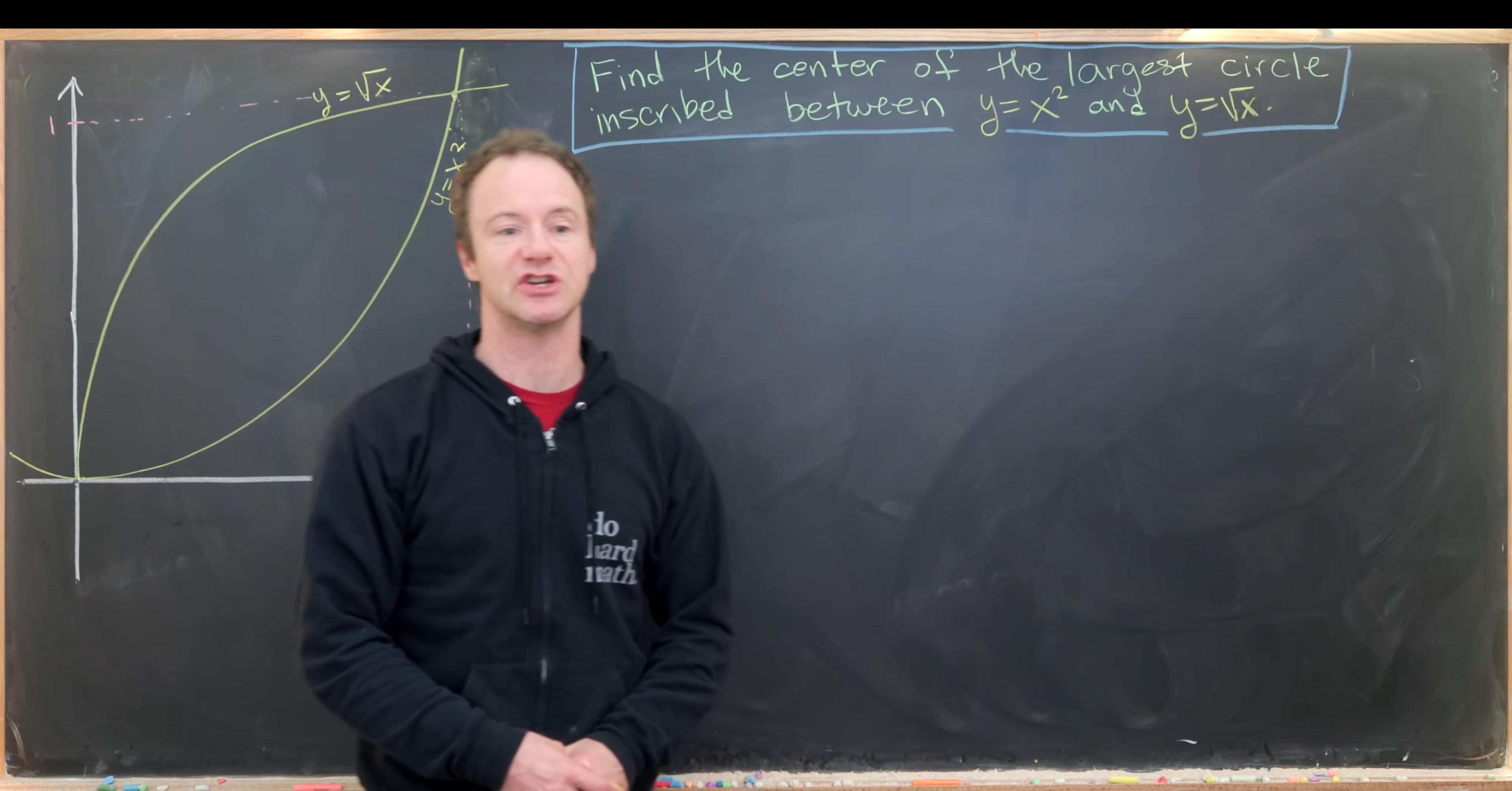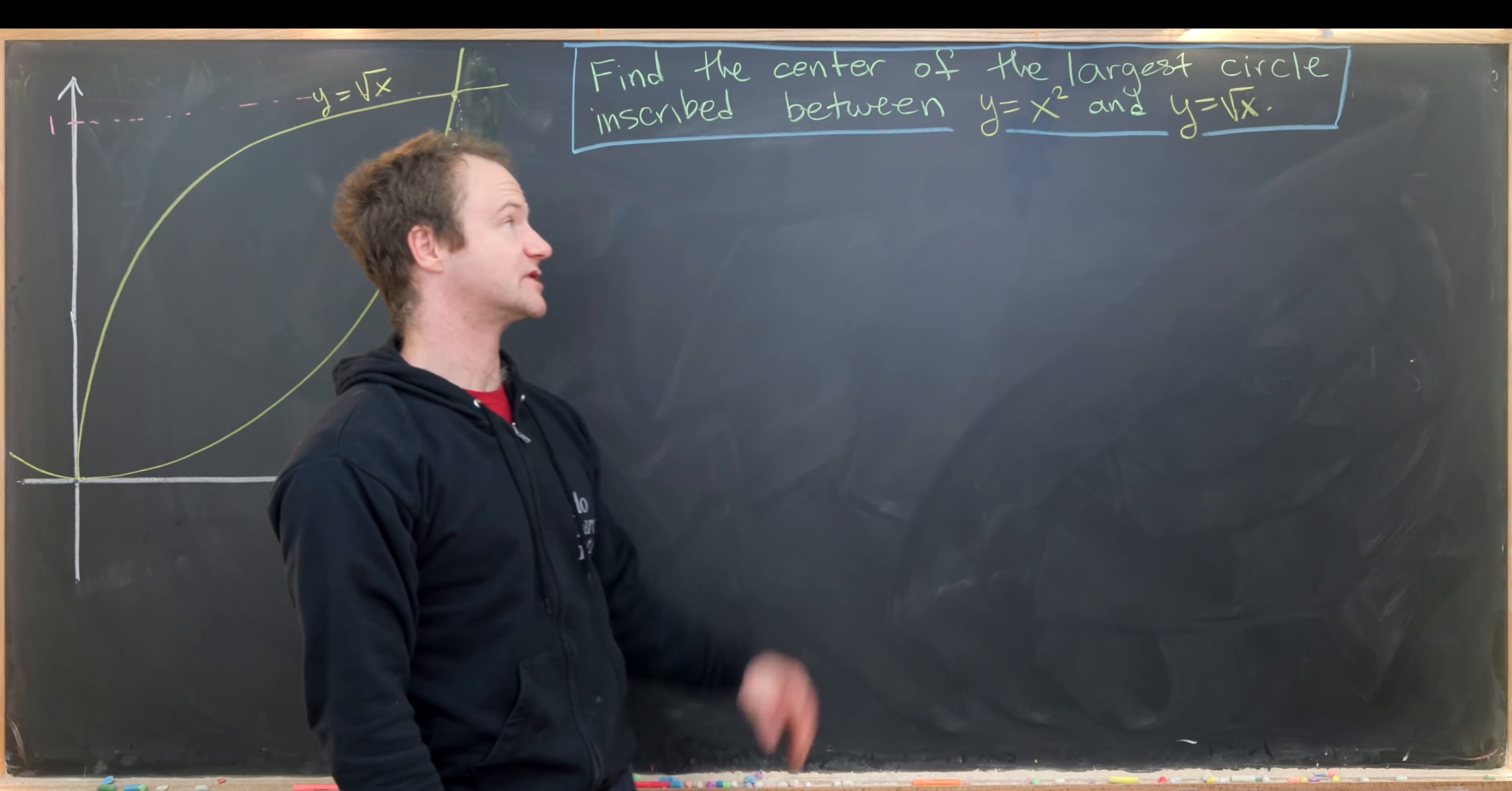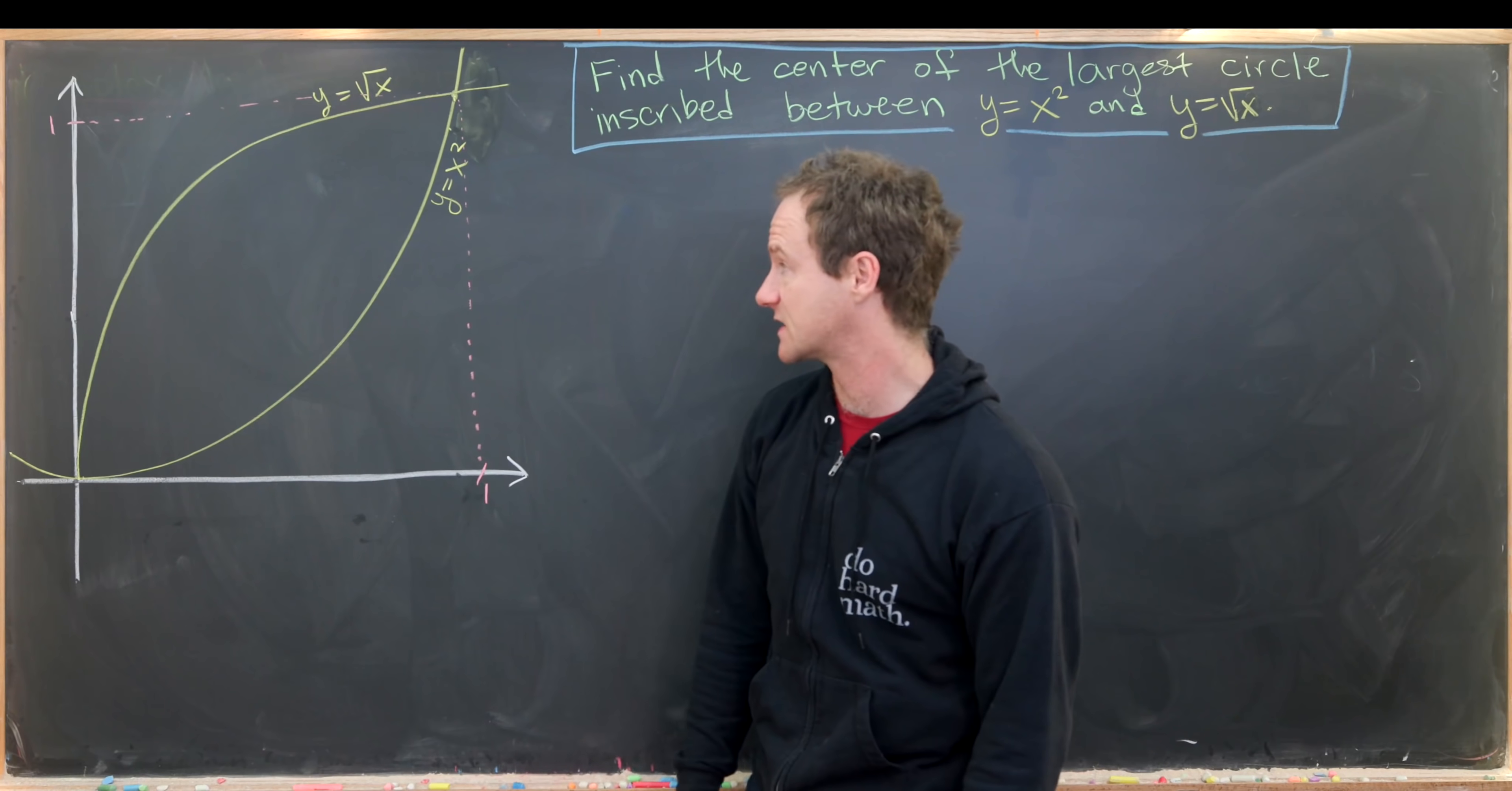Today I've got a nice calculus-based geometry problem. Our goal is to find the center of the largest circle that is inscribed between the parabola y equals x squared and the graph of y equals the square root of x.